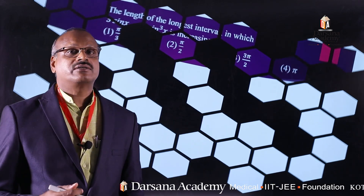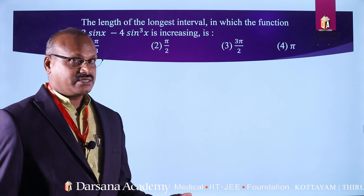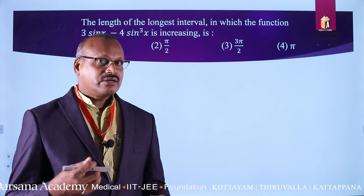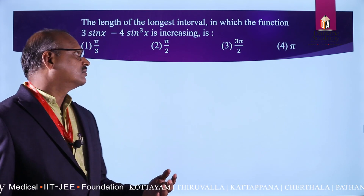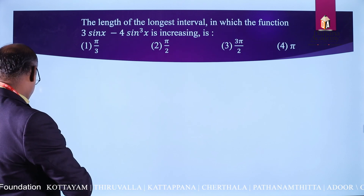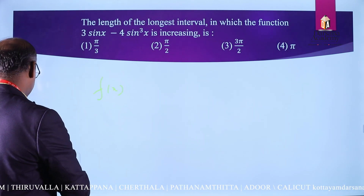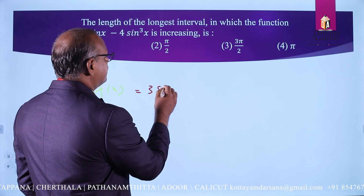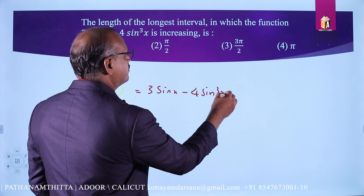The length of the longest interval in which the function y = 3sinx - sin³x is increasing or decreasing is blank. Now, if you have a function f(x) = 3sinx - 4sin³x.